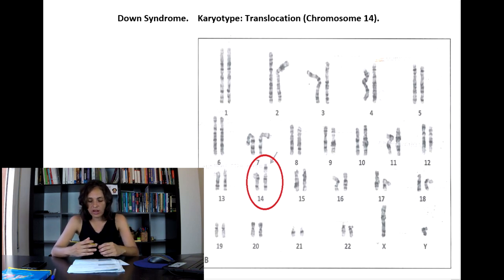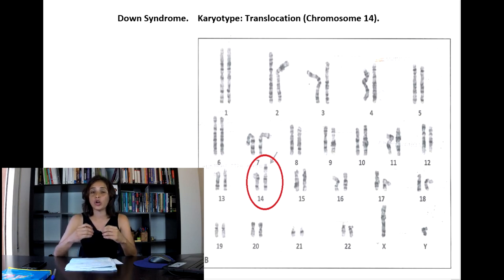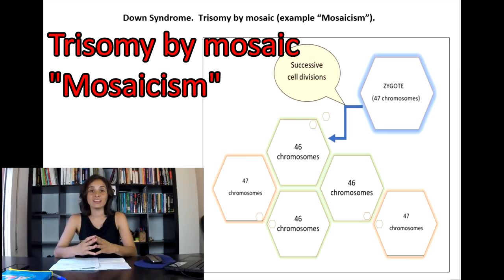It can be verified that the extra genetic material belongs to pair 21. For this reason, it's said that in chromosomal translocation, there is an exchange of segments. In our example, genetic material has been exchanged from pair 21 with pair 14. Now, we have trisomy by mosaic.